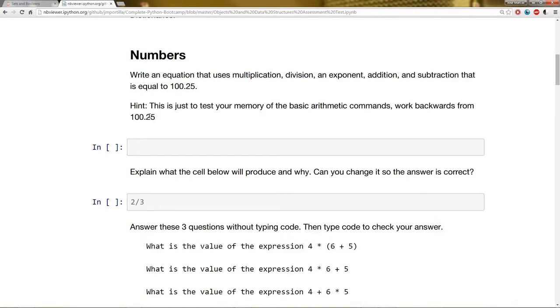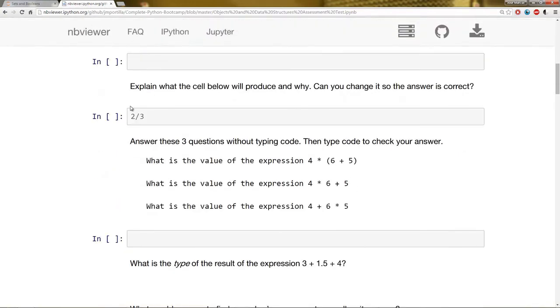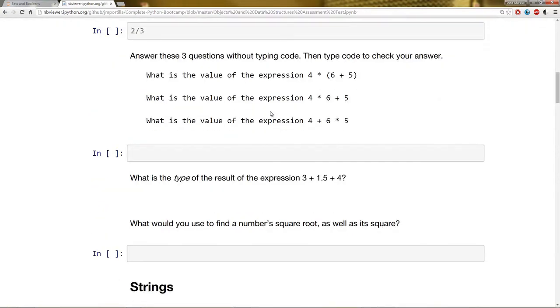So you can start with just dividing 100, then taking a power to it or a square root, etc. Next question, I have here 2 forward slash 3. So I want you to explain what you believe the cell below is going to output and how can you change the answer if it is correct. So remember that discussion we had of division between Python 2 and Python 3. That's what that question is getting at.